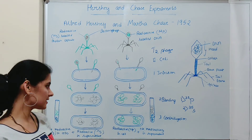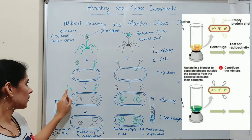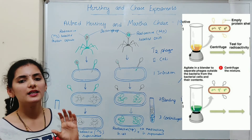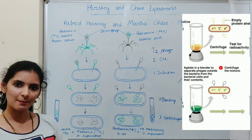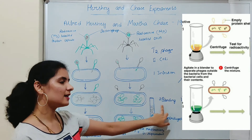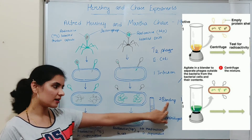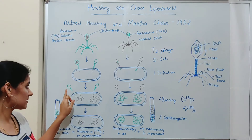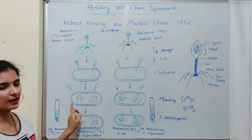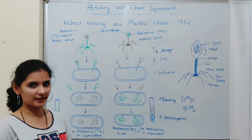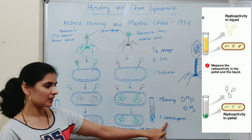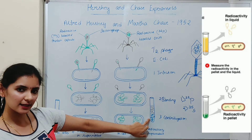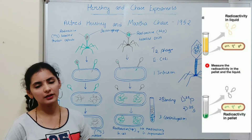As the infection proceeded, they separated the bacterial cells from the protein coat of the virus by blending or agitating them in a centrifuge tube. That step is known as blending, and it is done to remove the viral coat from the bacterial cell. Since the virus is only superficially attached to the bacterial cell, it can be removed easily by agitating them. The third step is centrifugation, where the centrifuge tube containing the mixture of bacterial cells and viral coat is allowed to undergo centrifugation.